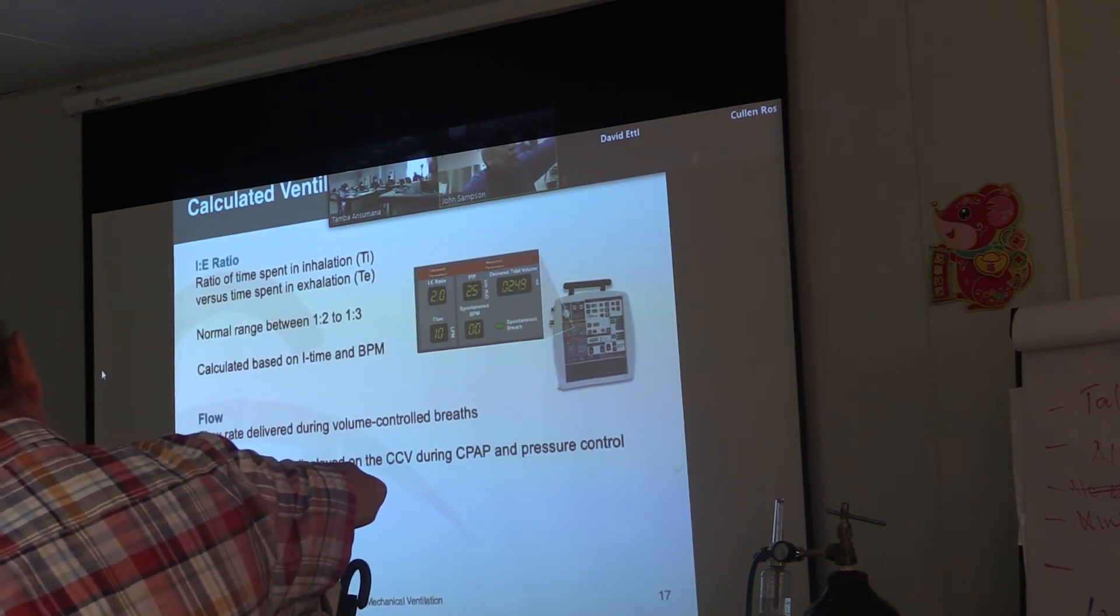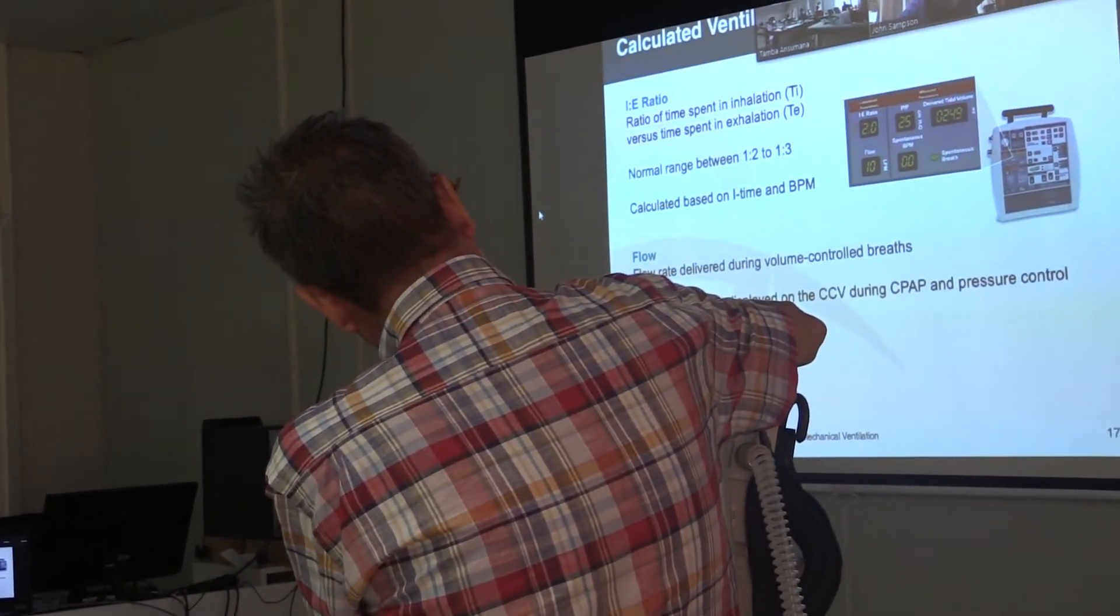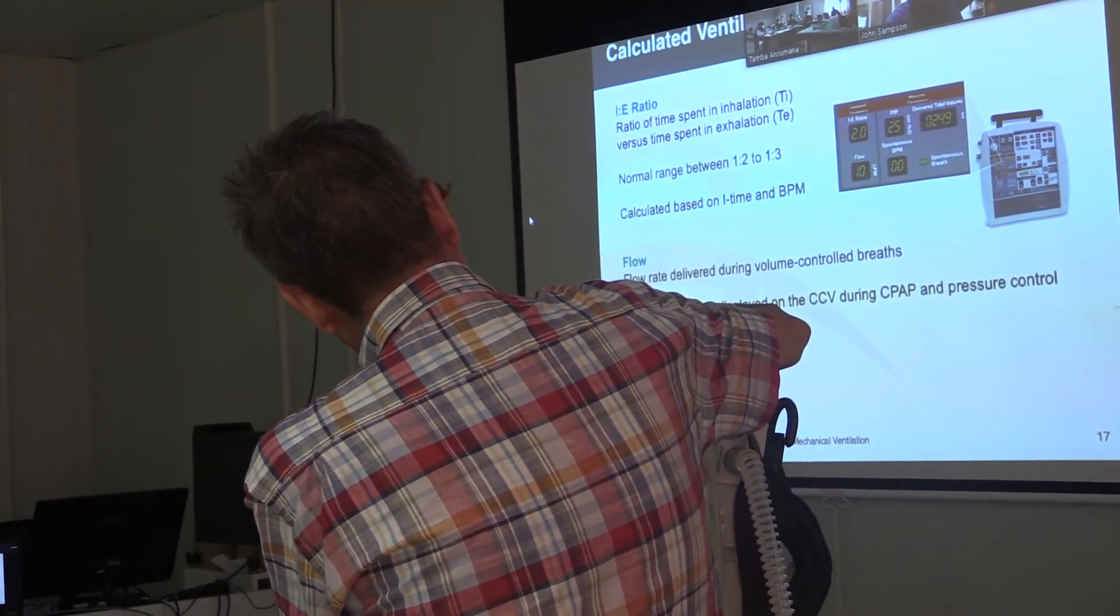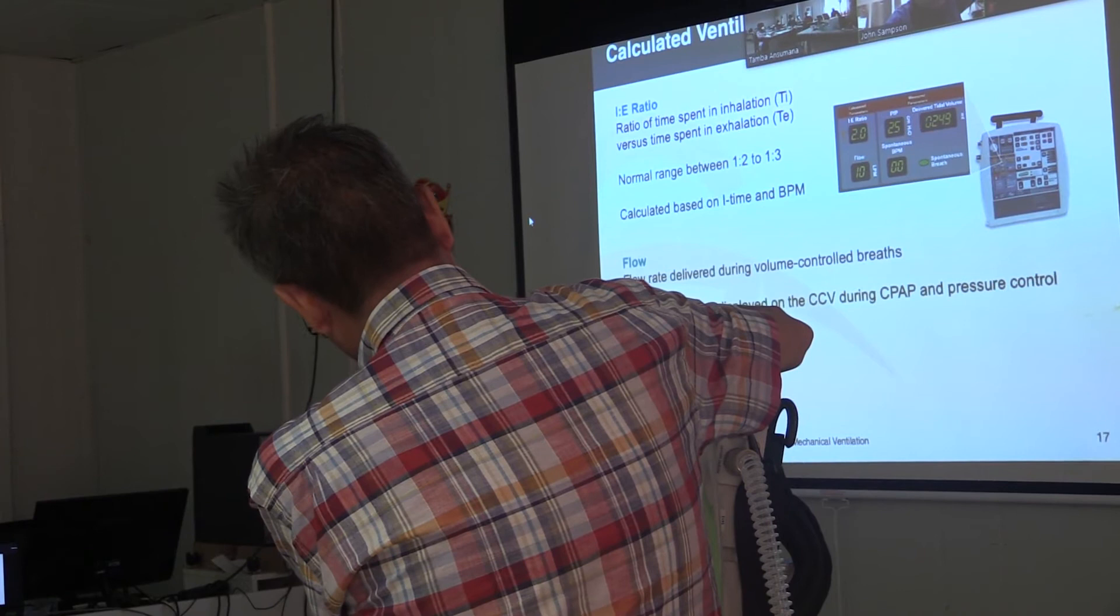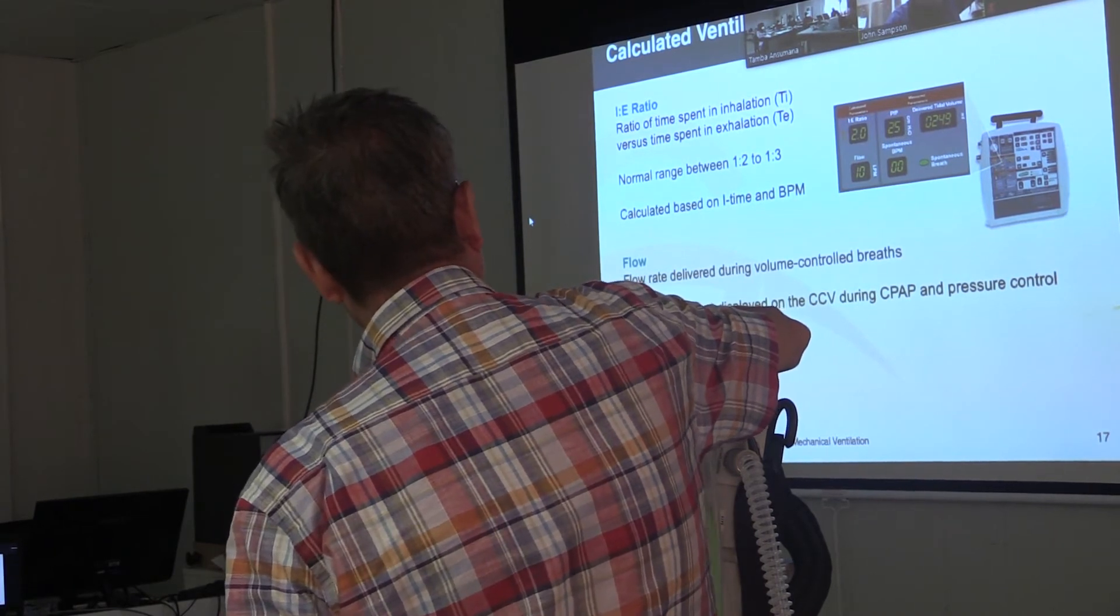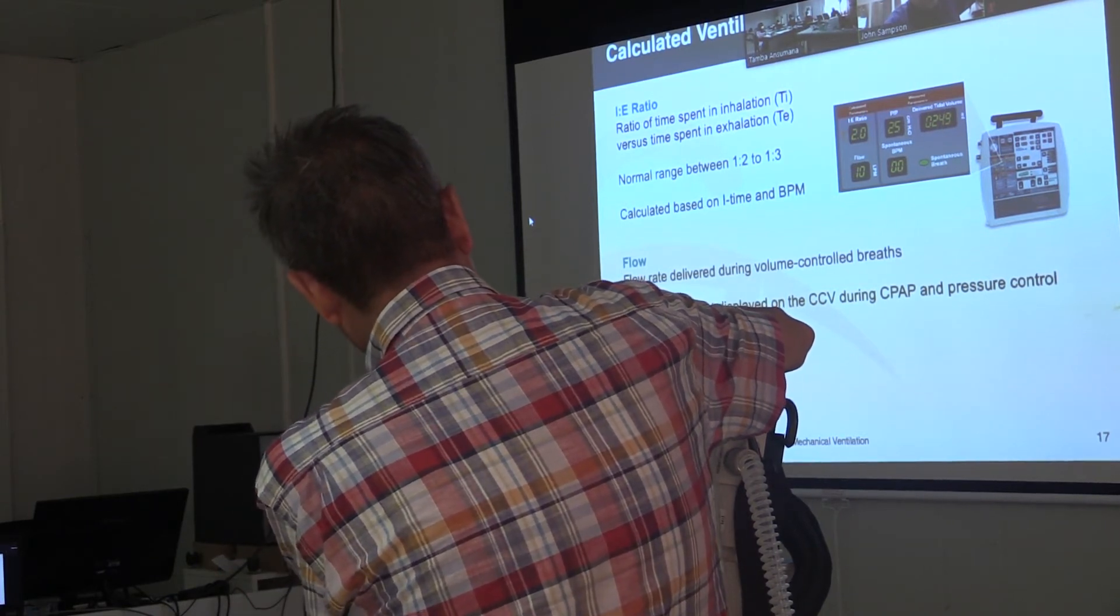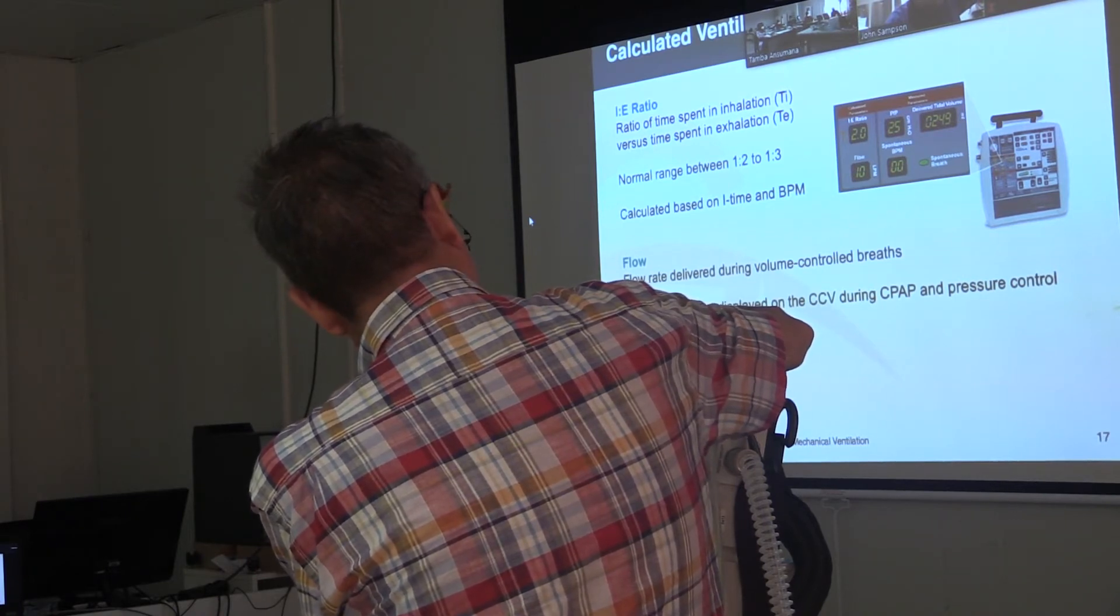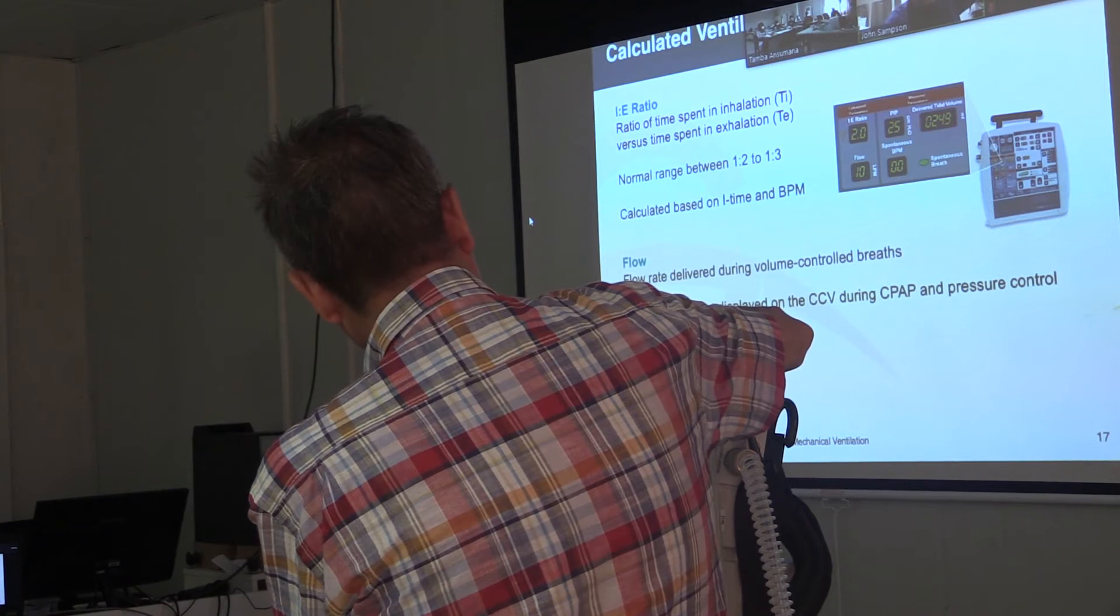Under ventilator setting, you set the I time, but under where it says calculated, that's where the ventilator calculates the I to E ratio, which you want to start out at one to two or one to three, but you often will change that. The ventilator measures the peak inspiratory pressure, which what it's actually measuring might be different than what you actually set. And it measures the tidal volume. The tidal volume you measure may be different from the tidal volume you set, depending on what's happening with the patient.